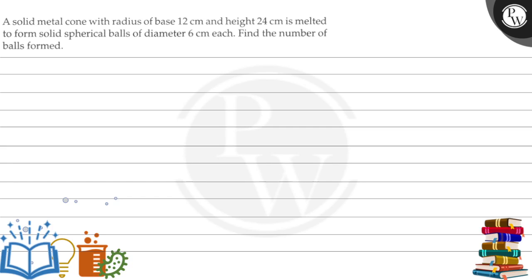Hello, let's read the question. The question says, a solid metal cone with radius of base 12 cm and height 24 cm is melted to form solid spherical balls of diameter 6 cm each.